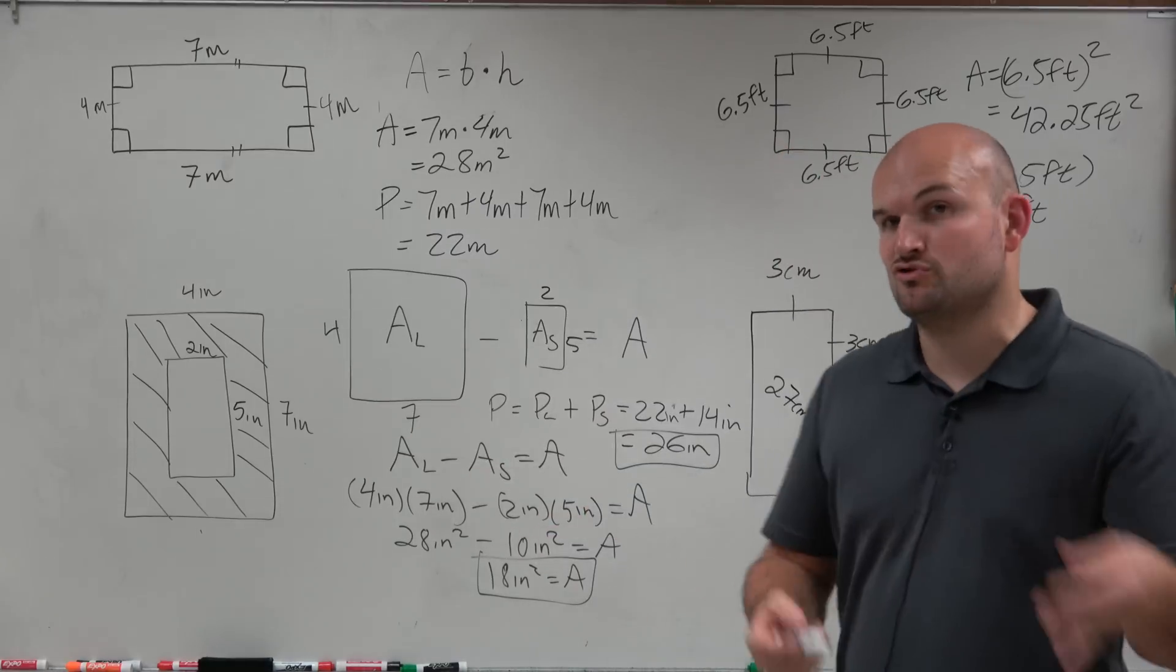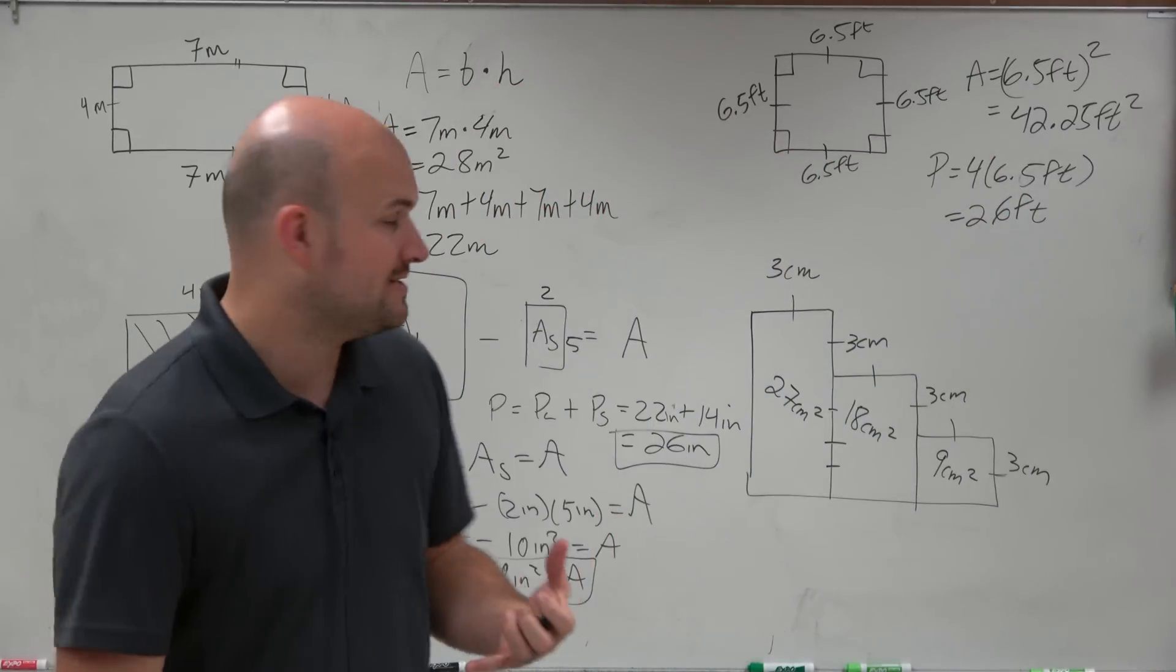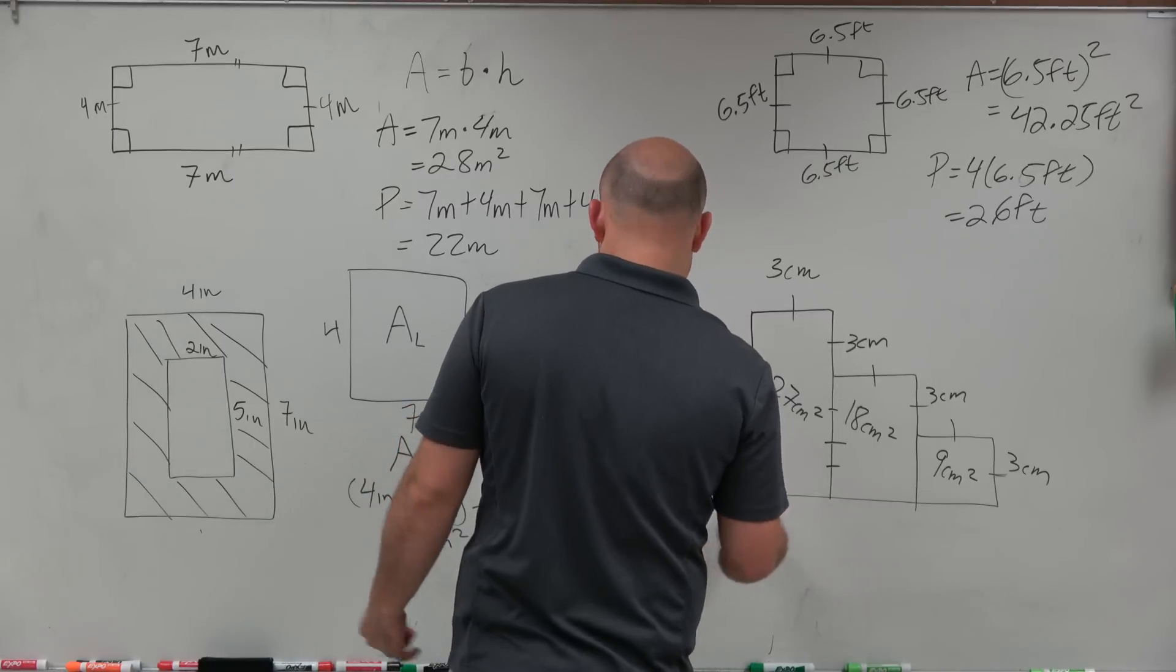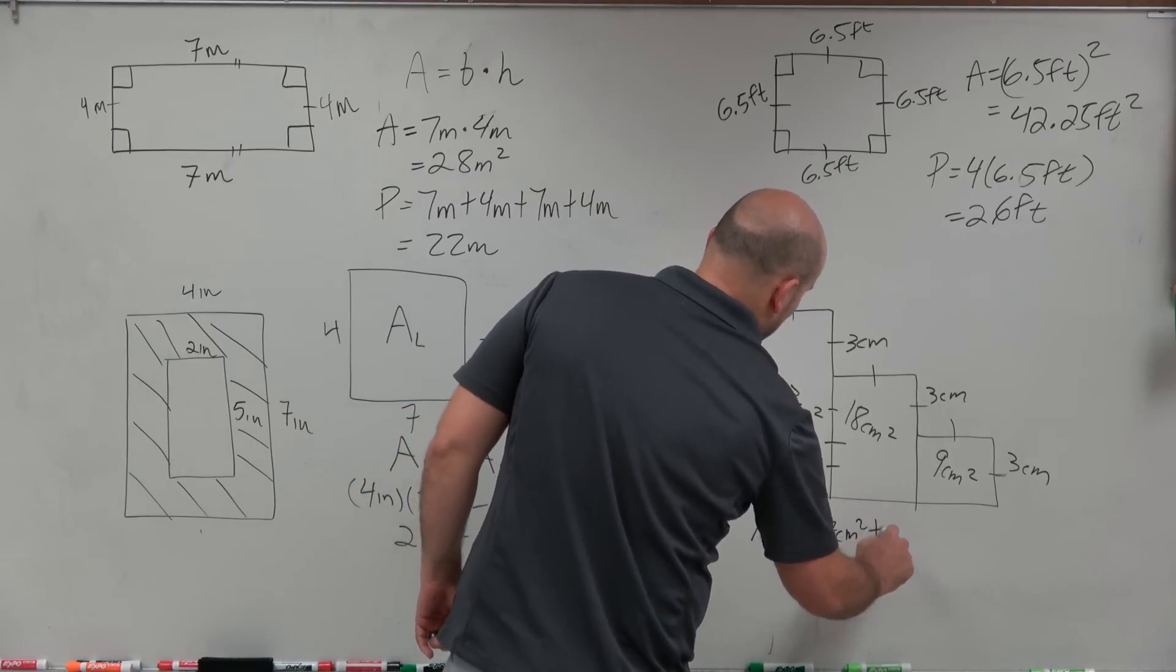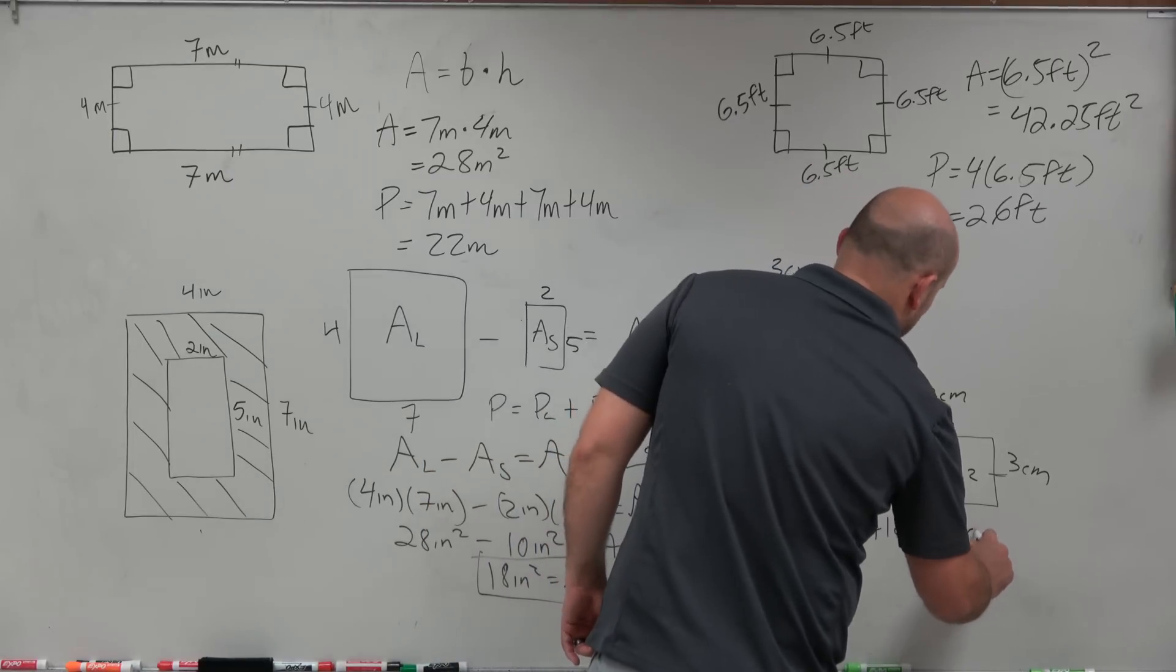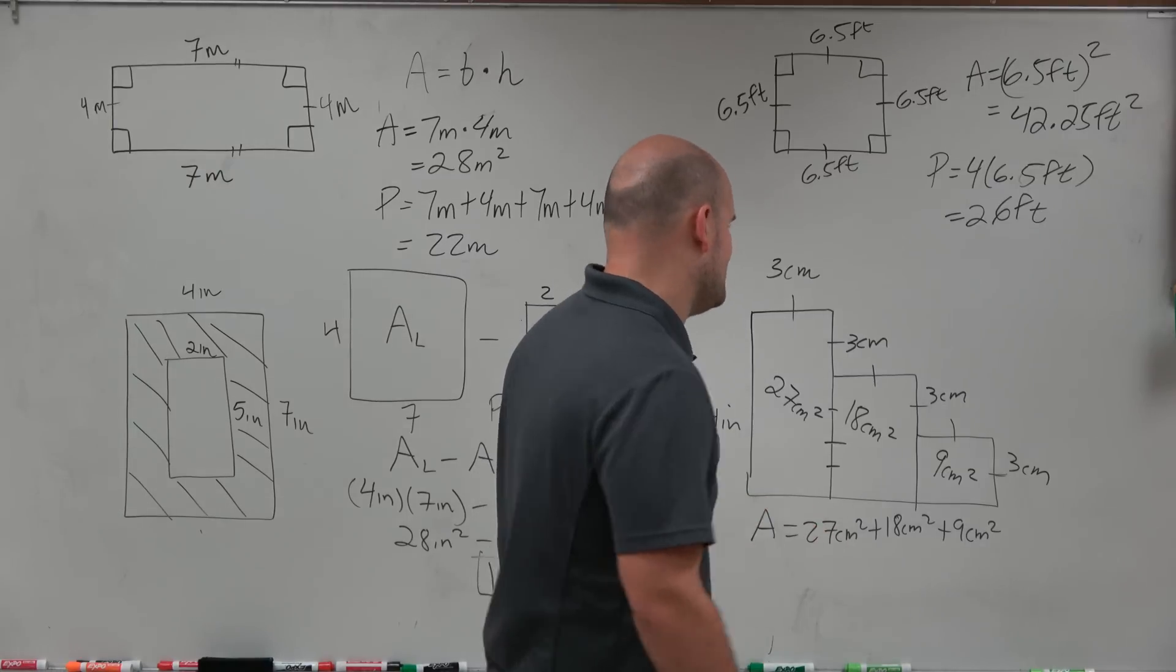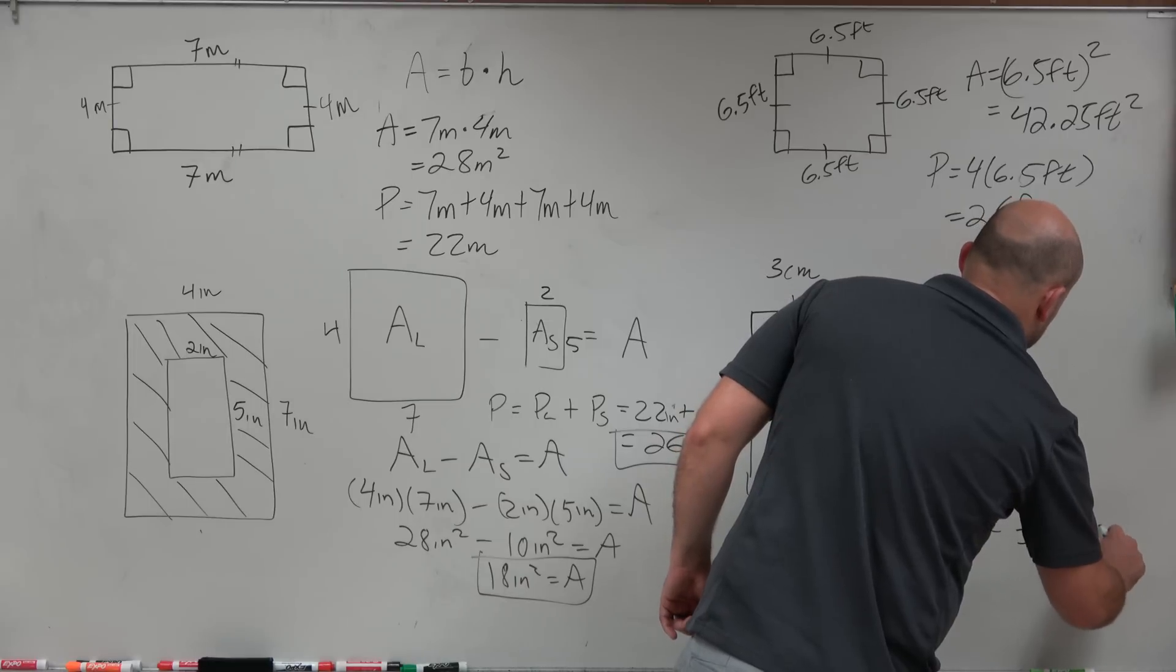In the previous example we had to subtract - we had a larger area and a smaller area, so we subtracted them to find the difference. Here we're actually adding all of those up. So the area of this figure is going to be 27 centimeters squared plus 18 centimeters squared plus 9 centimeters squared. That's going to be 54 centimeters squared.